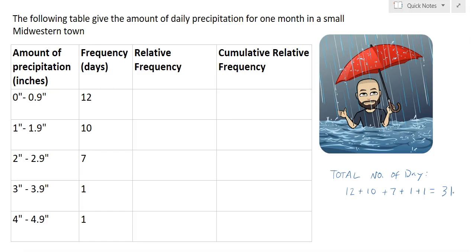To compute a relative frequency, the number of days with between 0 and 0.9 inches of rain was 12. So we would take 12 divided by the total of 31 days and that gives me a relative frequency of about 0.387. We can either give it as a fraction, 12 over 31, or as a decimal, 0.387.